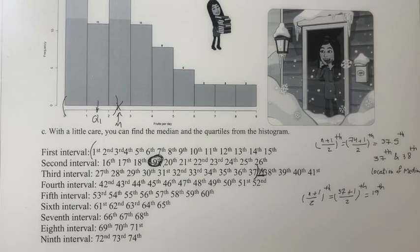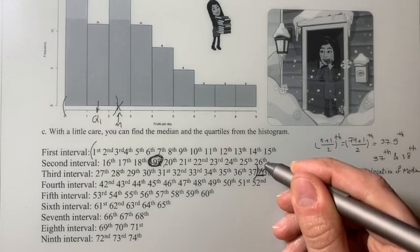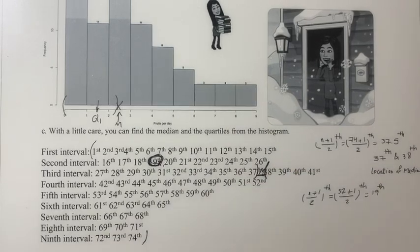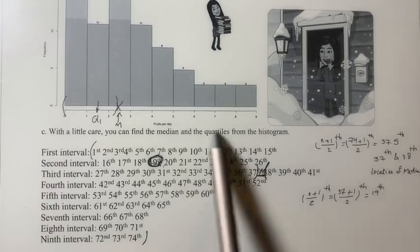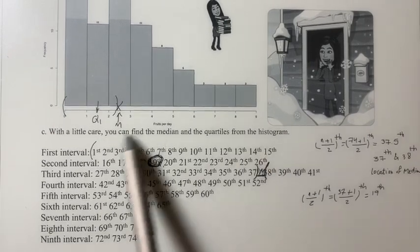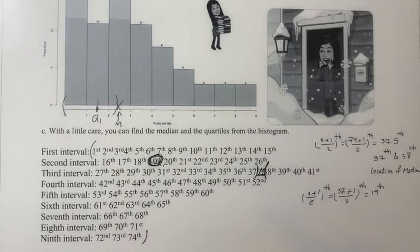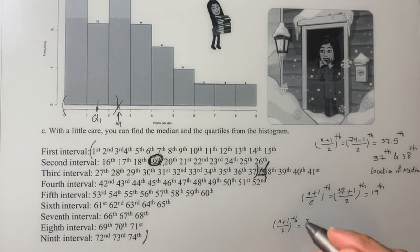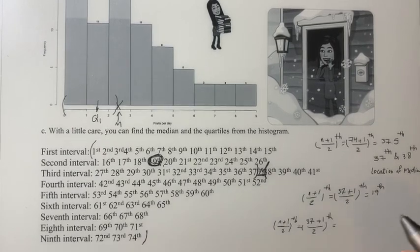Now, how do we find Q3? Q3 is the midpoint for the observations after the median to the last observation, number 74. So obviously, if we had half the data set on the left side of the median, we have half the data set on the right side of the median. If we had 37 observations on the left side, we have 37 observations on the right side. So again, we can use the same method.